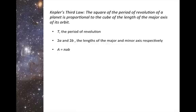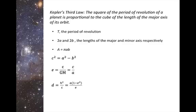I also want to go over some formulas pertaining to the geometry of an ellipse. The area of an ellipse is equal to πab. The square of the foci of an ellipse is equal to a² minus b². The eccentricity is equal to c over a. And d, the directrix, is equal to h² over c, which is also equal to a times (1 minus e²) over e. We need to find an expression for T, our period.